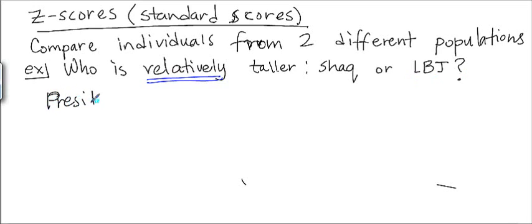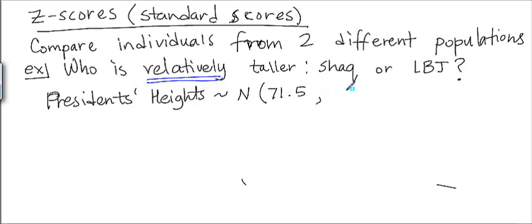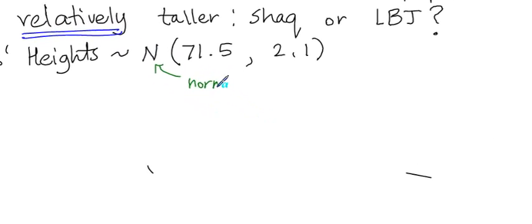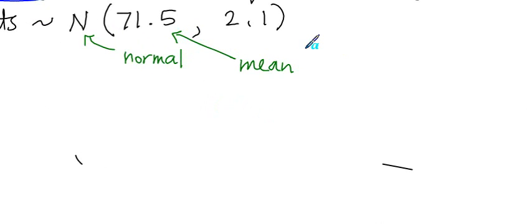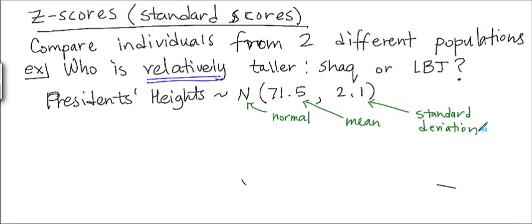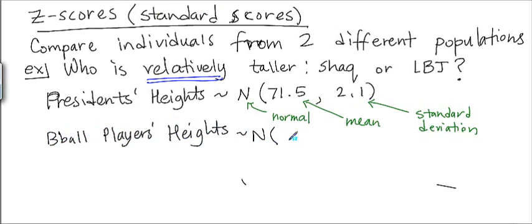We know that presidents' heights are normally distributed with a mean of 71.5 and a standard deviation of 2.1 — written as N(71.5, 2.1), where the first number is the mean and the second is the standard deviation. Basketball players' heights are normally distributed with a mean of 80 inches and a standard deviation of 3.3 inches.